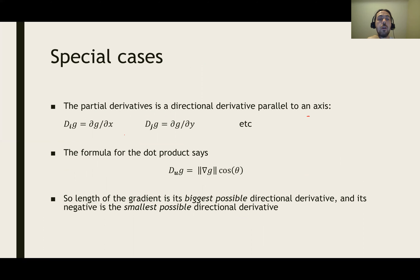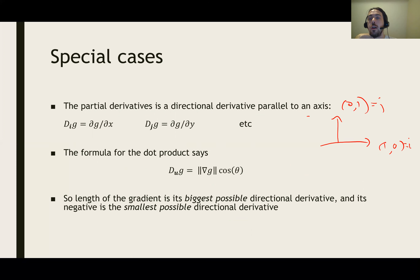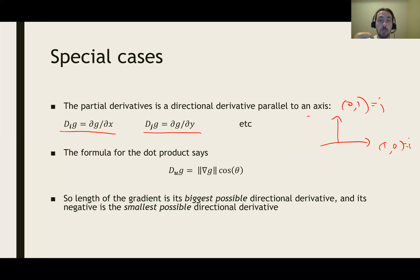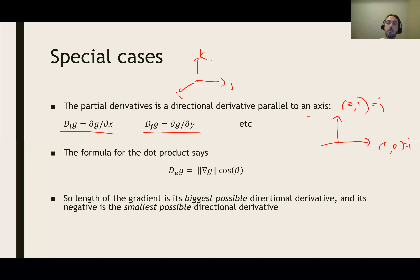Special cases of the directional derivative include the derivatives in the x direction or the y direction. The vector (1, 0) is a unit vector and the vector (0, 1) is a unit vector. Taking the directional derivative in the direction of (1, 0) is the same as the partial derivative with respect to x, and in the direction of (0, 1) gives the partial derivative with respect to y. For a function of three variables, the partial derivatives with respect to x, y, and z correspond to the i, j, and k directional derivatives.